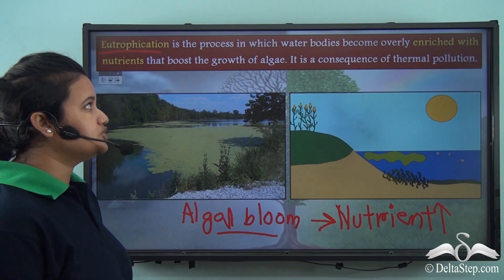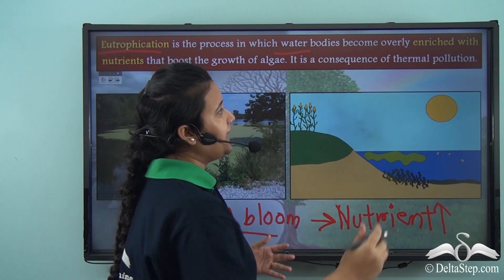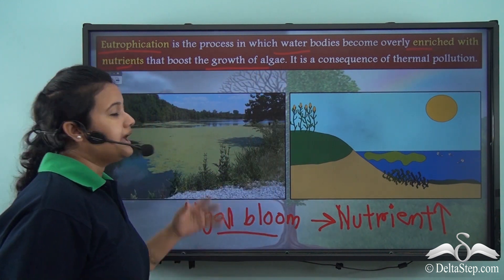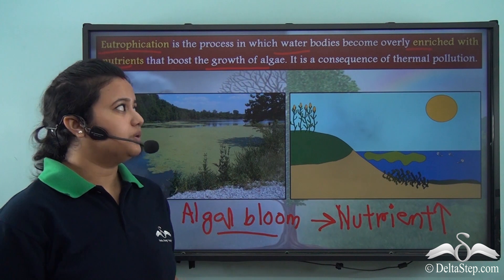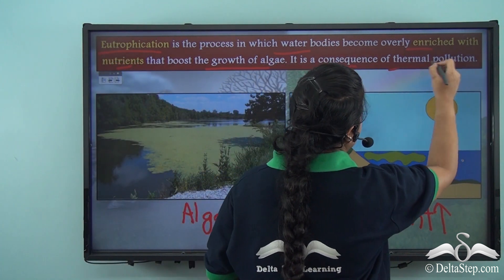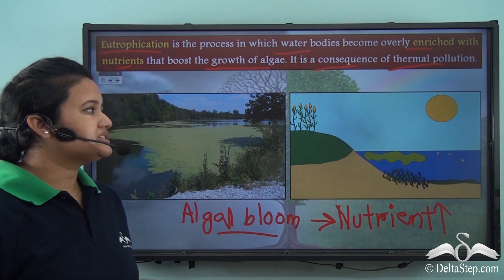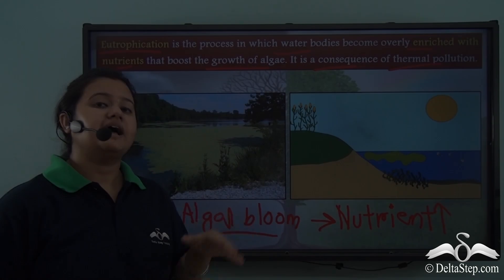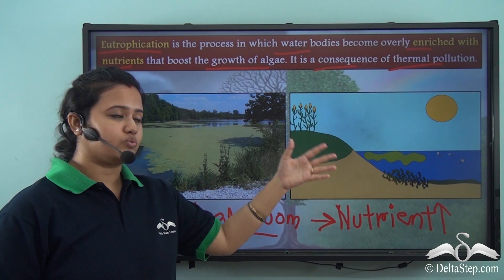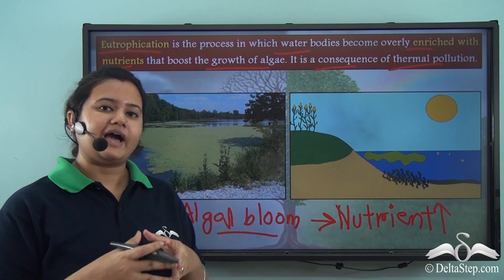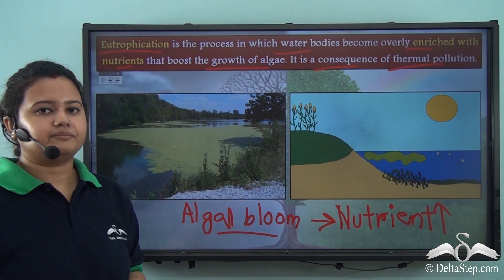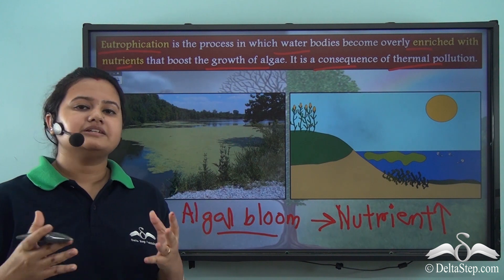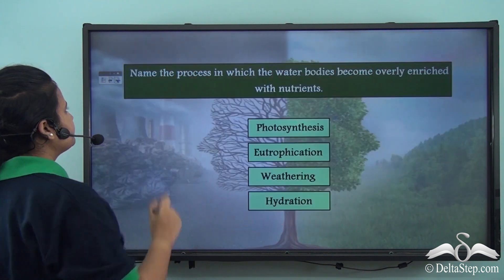This entire situation is known as eutrophication. Eutrophication is the process in which water bodies become overly enriched with nutrients that boost the growth of algae. Eutrophication is a consequence of thermal pollution, because thermal pollution increases the temperature of water bodies, causing more nutrients to dissolve, which facilitates algae growth and thereby causes eutrophication.